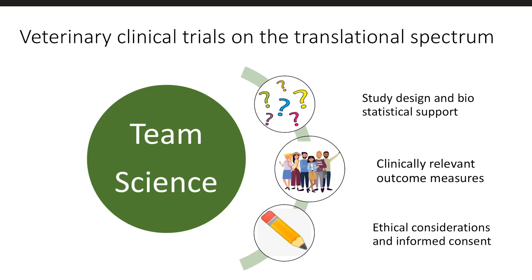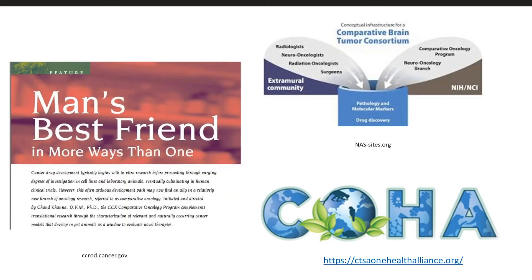Some important considerations, not unlike a human clinical trial, include a priori sample size determination to ensure a well-powered study, careful selection of outcome measures that assess known therapeutic targets and clinically relevant treatment effects, ethical review and approval by institutional review boards, and informed consent, in this case given by the owner of the animal. The design and conduct of veterinary clinical trials is an emerging area of interest for many researchers on the translational spectrum, with groups such as the NCI-funded Comparative Brain Tumor Consortium and the NCATS-affiliated CTSA One Health Alliance paving the way with infrastructure, investigator support, and results to facilitate this bidirectional initiative in health research.